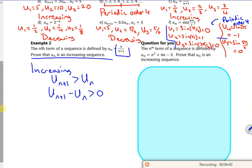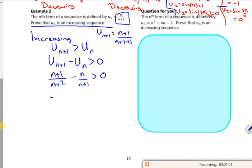I've got my un, that's fine. But if it's un plus 1, it'll be n plus 1 over n plus 1 plus 1. So un plus 1 is n plus 1 over n plus 2, and that's minus un which is n over n plus 1, and I'm saying that's bigger than 0. If I combine it as a single fraction, I've got n plus 2 n plus 1. I've got n plus 1 all squared minus n times n plus 2.